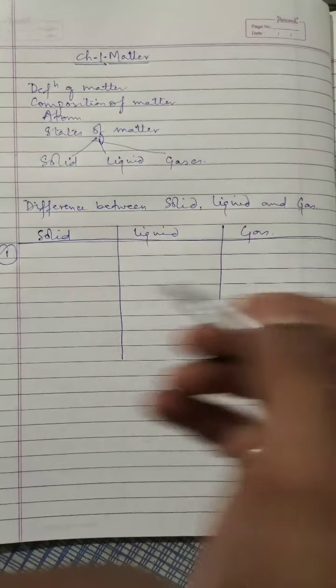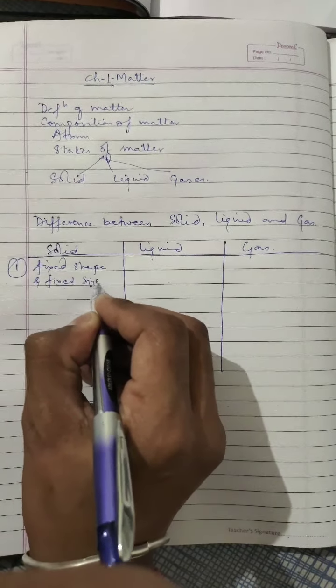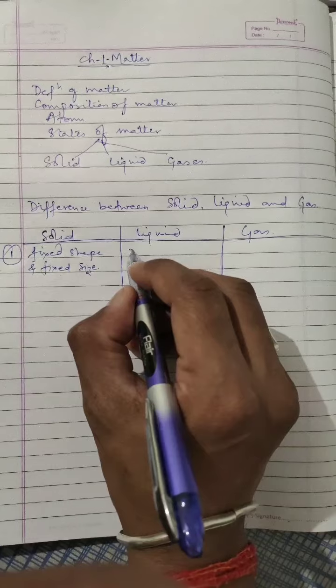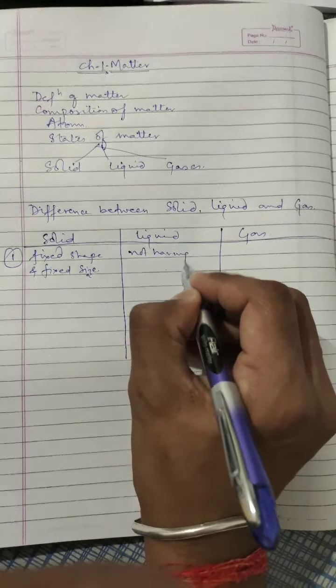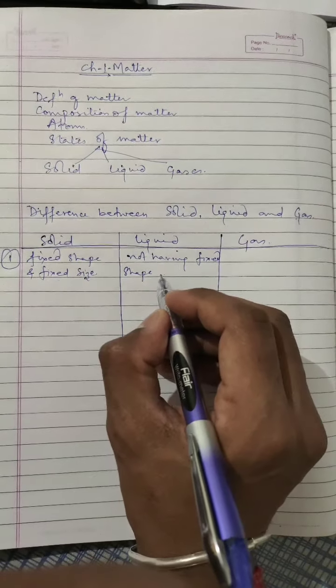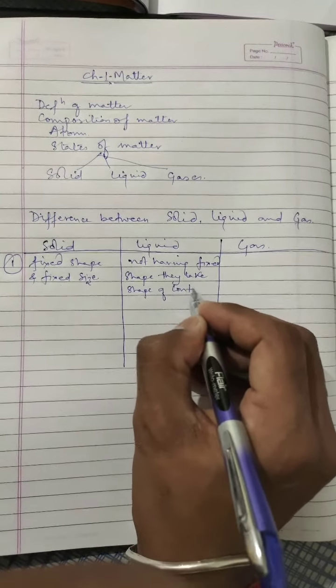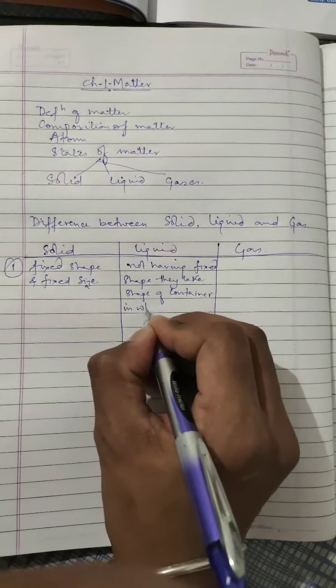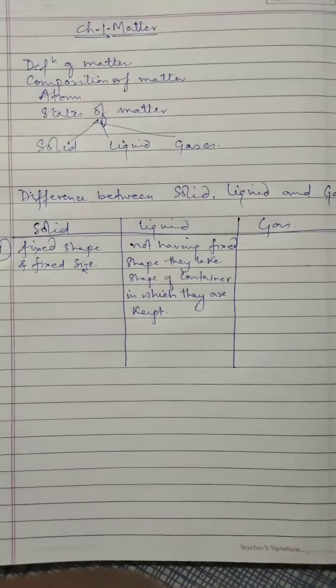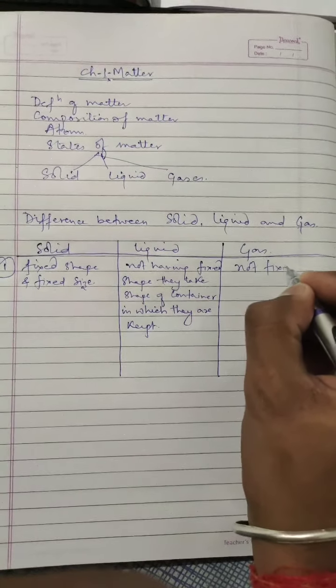The very first point: solid has fixed shape and fixed size. All solid substances are having fixed shape and their fixed size. Liquids are not having fixed shape. They take shape of container in which they are kept. Liquid takes the shape of container in which they are kept. Gases are also having not any fixed shape.